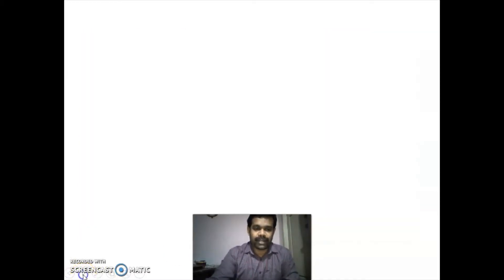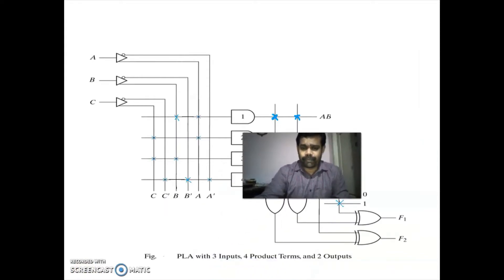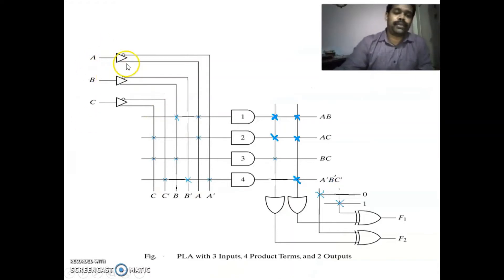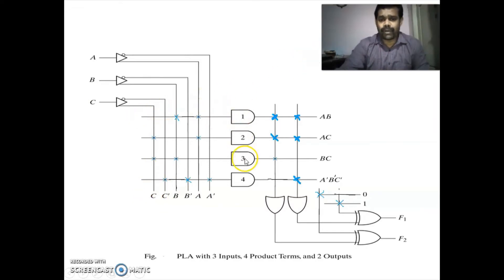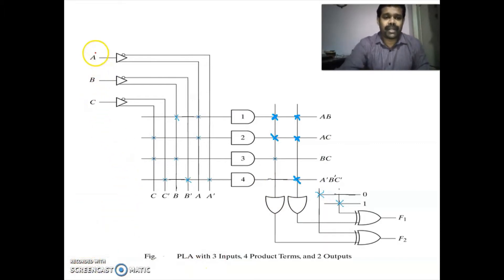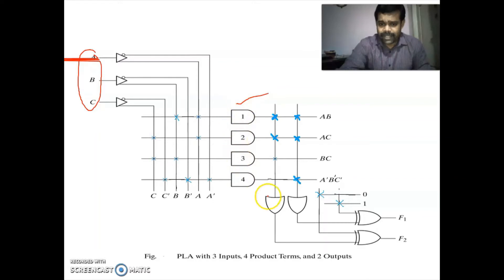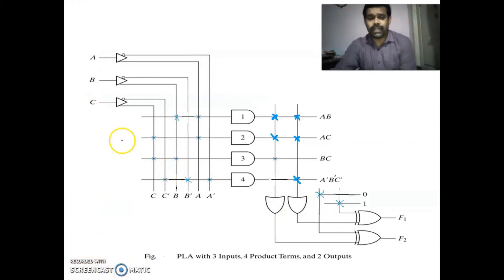Now we'll go for implementation. This is a PLA which has three inputs. Here you are having an inverter buffer — this will give the true output of the variable as well as the complement output of the variable, so you are getting A, A-bar, B, B-bar, C, C-bar. Since we are having four product terms we have drawn four AND gates, and since we are having two outputs we have drawn two OR gates.